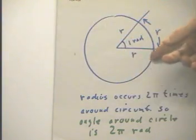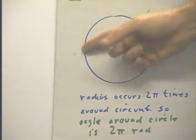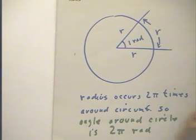The circumference of this thing is 2π or 6.28 times the radius. So the radius arc will fit into the circle 2π times. That means that the angle around the circle has to be 2π radians, and you really need to understand that thoroughly.